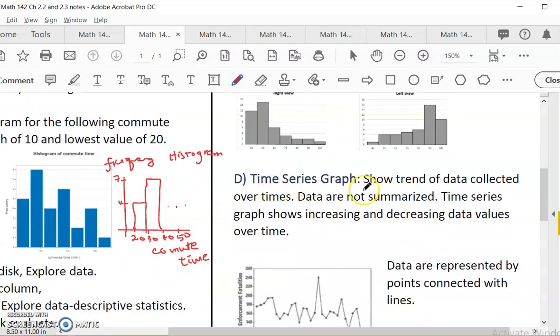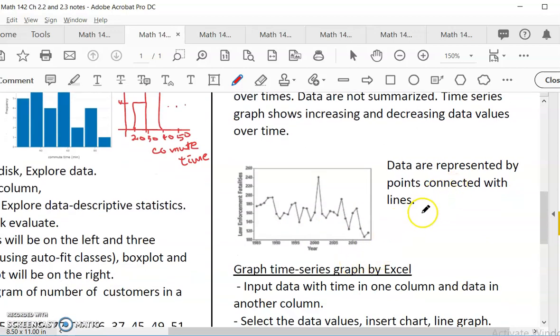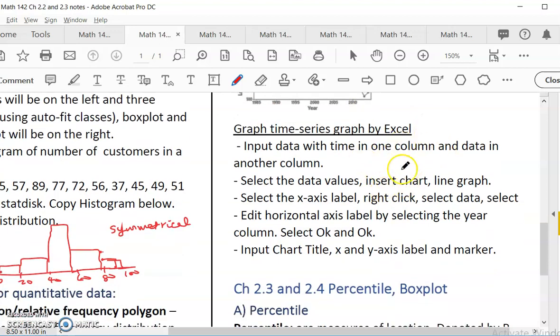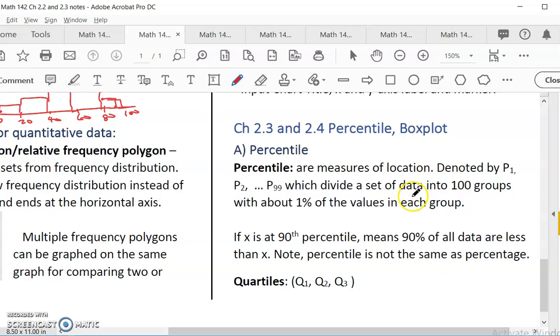The last part of 2.2 is time series graph. If the data are collected over time, we do not want to summarize it. We want to use a time series graph to plot the up and down of the data so that we can see when it is increasing, when it is decreasing. It is easy to see the trend. Although it is up and down, you can see that there is a downward trend. Data are represented by lines. The time usually is on the x-axis. You can graph time series graph by Excel. This is not required for our class.